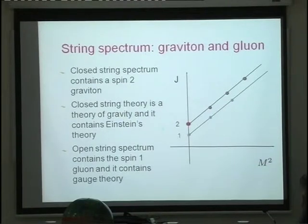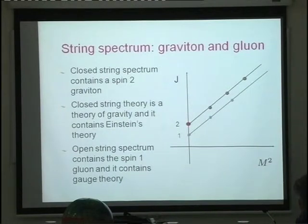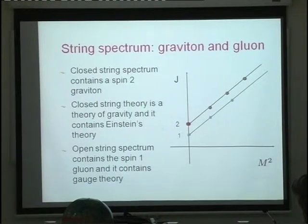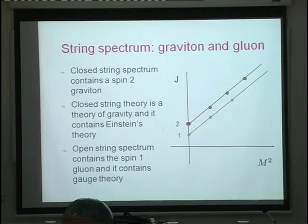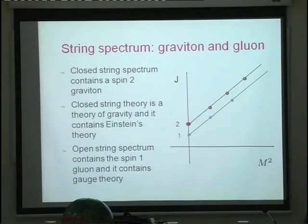Anyone with a particle physics background will immediately realize that something very deep is going on here. The J=2 object is a graviton — the quantum of the general theory of relativity. The J=1 object is the quantum of Maxwell's theory, the photon. This is a great discovery: string theory contains the basic tenets of general relativity and also of Maxwell's theory and its generalizations used in the theory of elementary particles.